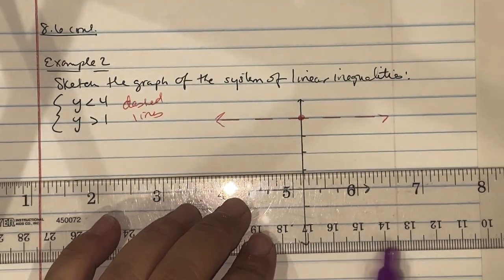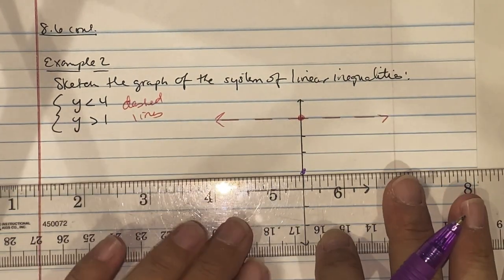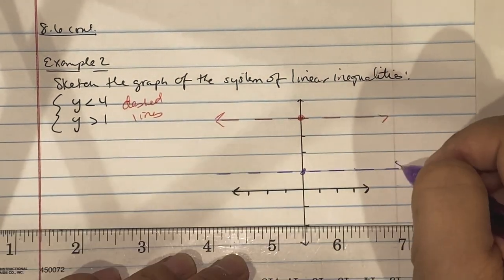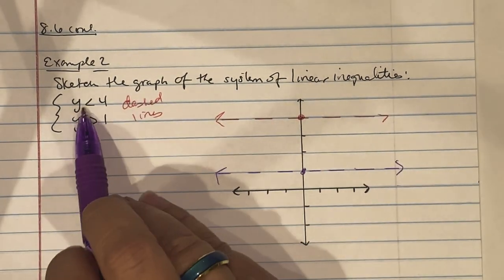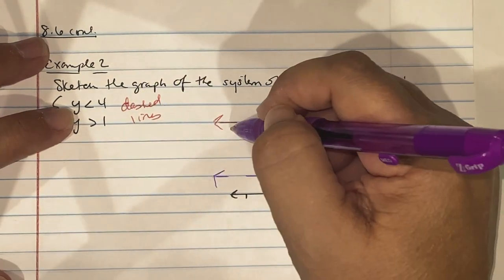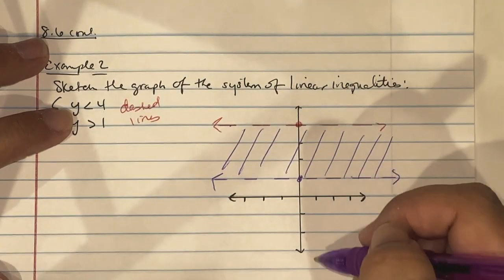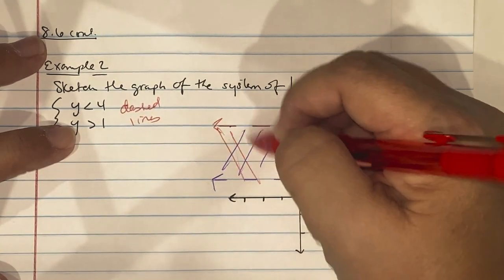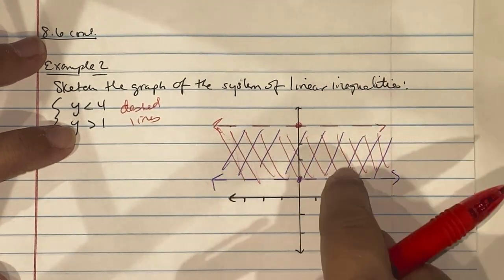Put arrows on the ends. For y greater than 1, go to positive 1 on the y-axis and sketch another dashed horizontal line. For the first inequality, all values of y must be less than 4, so shade downward. For the second, all values of y must be greater than 1, so shade upward. The solutions are in between the two lines.